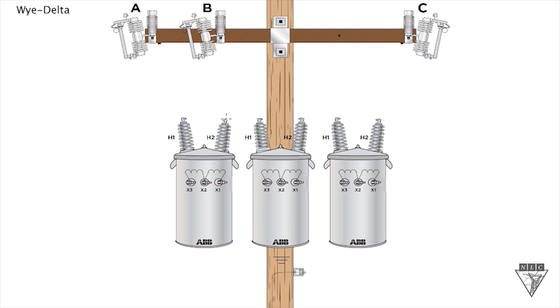So first thing we need to do is we need to take all our H2 bushings and connect them together. Once they're connected together, we're not going to tie it to ground. So a common saying with a Y-delta connection is Y-delta you float, meaning that the H2 bushings are connected together but they're not tied to ground.